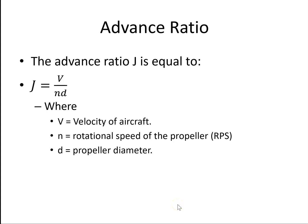The advance ratio is something that's often quoted when we talk about propellers. And it is simply the velocity of the aircraft over the revolutions per second of the propeller by the diameter of the propeller.